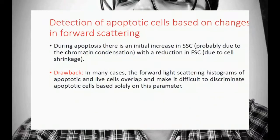Detection of apoptotic cells can be based on changes in light scattering. During apoptosis, there is an initial increase in SSC (side scatter) with a reduction of FSC (forward scatter). If a value is very near to the Y-axis where SSC is plotted, the cells are in an apoptotic phase, because SSC is high and FSC is low due to cell shrinkage — the apoptotic cells are losing structure and size.